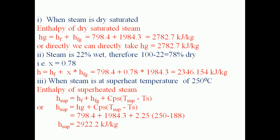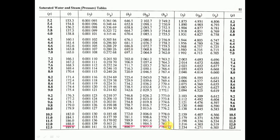HFG is the amount of heat required to convert 1 kg of water completely into dry saturated steam. Adding these two heats gives the enthalpy of dry saturated steam: HF = 798.4 plus HFG = 1984.3 gives HG = 2782.7 kJ/kg. Alternatively, we can take HG = 2782.7 kJ/kg directly from the steam table.